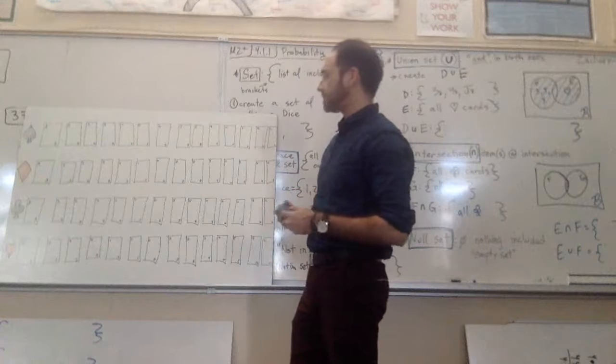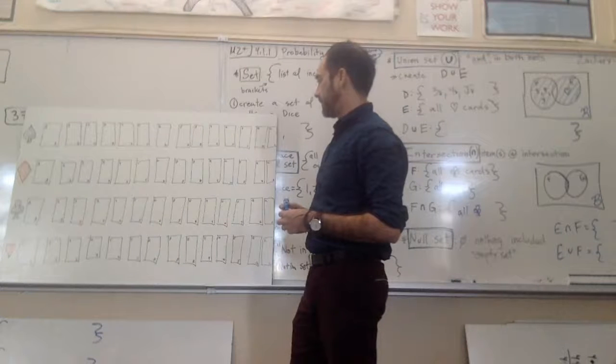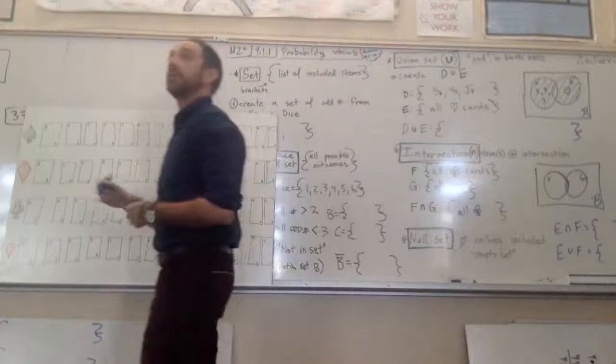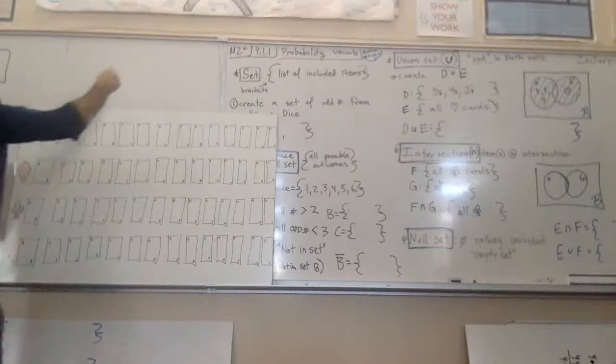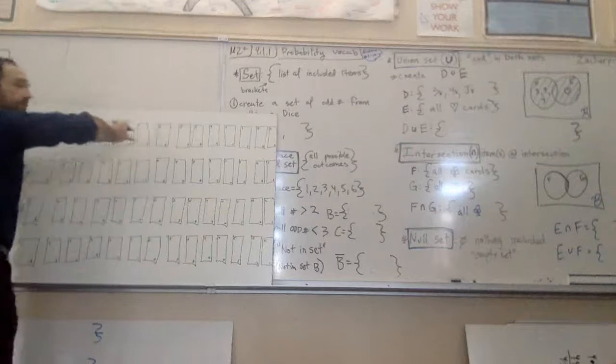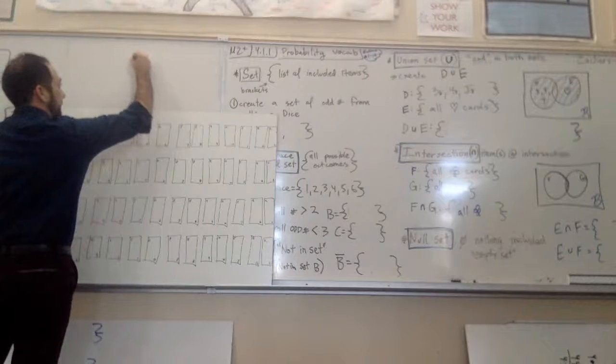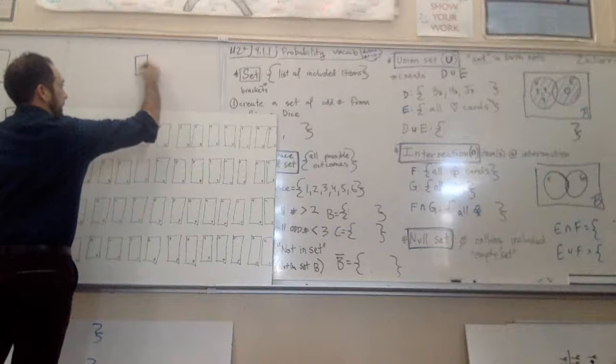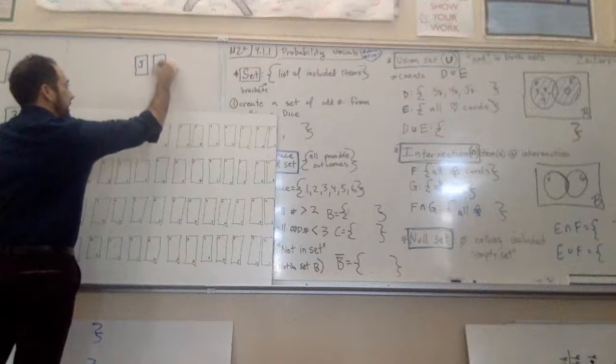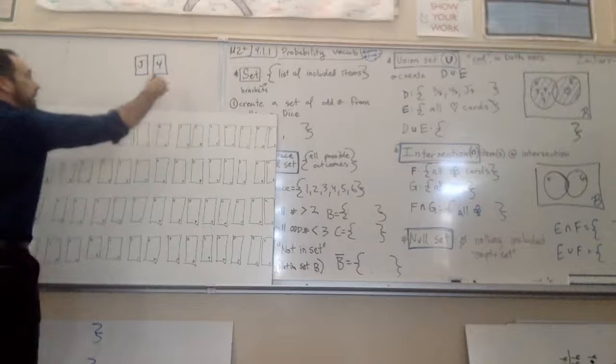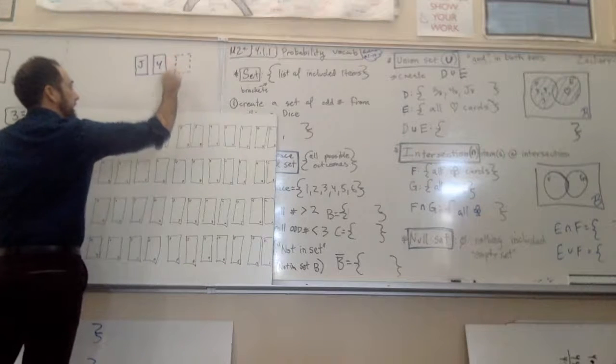But if I was playing a card game, say we were playing 21 - anybody know how to play 21? Okay, so let's say if it was only me and the dealer, so they're just dealing to me only. And right now I have, let's see, I have a jack, I have a four. What else do I need to get 21?